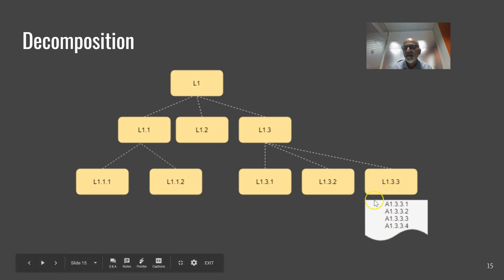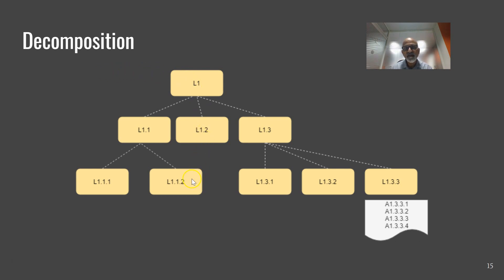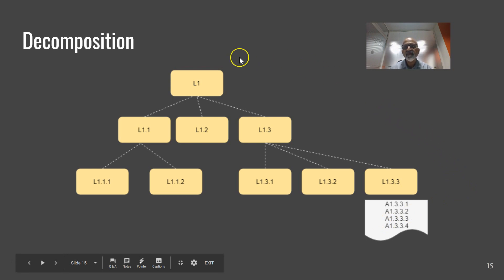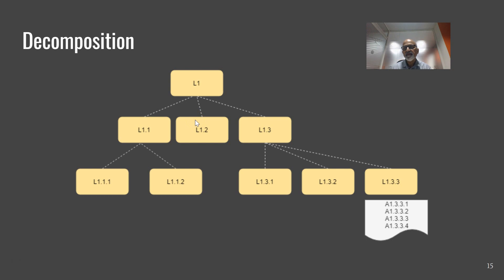Here we can see the activity list. We had the scope document, we decomposed the scope document into a work breakdown structure, and the work packages we decomposed into activities. So we are talking about two levels of decomposition: the first is from scope to WBS, and the second is from work packages to activities.